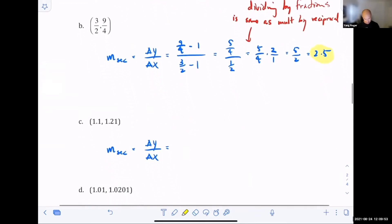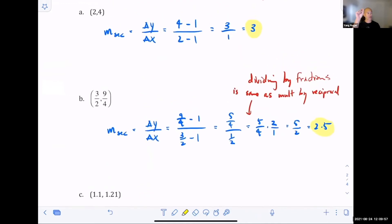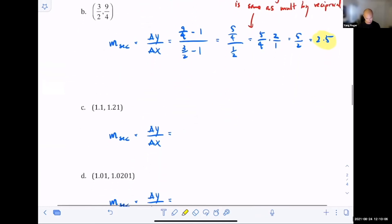Any questions? I'm just moving that point, the second point, closer and closer to the first point. I'm trying to mimic that slider moving to the fixed first point there. But we're actually calculating what these slopes are going to be.